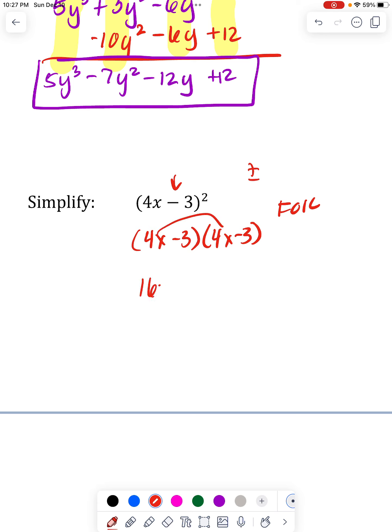So first, it'll be 16x². Outside will be -12x. Inside is another -12x. Those do not cancel because they're both negative.